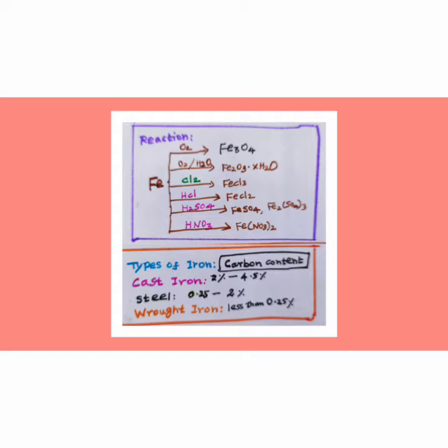When react with chlorine, we get ferric chloride. When react with hydrochloric acid, ferrous chloride. In react with sulfuric acid, that is diluted one, we get ferrous sulfate, iron 2.